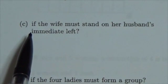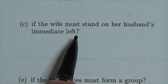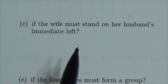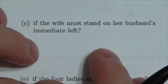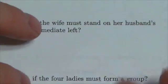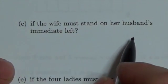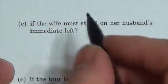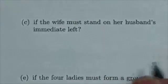The restriction in this question is that the wife must stand on her husband's immediate left. If you think about that, what it means is that for each pair of people I have no choice over the way they are permuted — their specific arrangement. So the only thing I have control over is the order that the couples themselves stand.